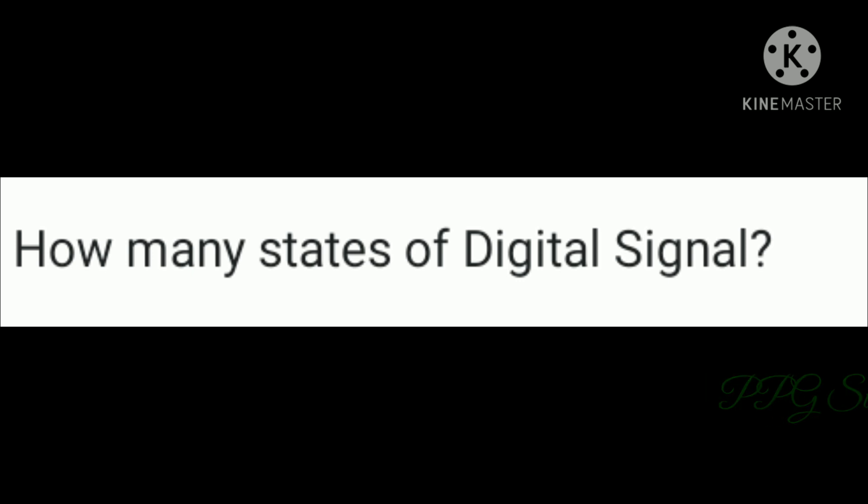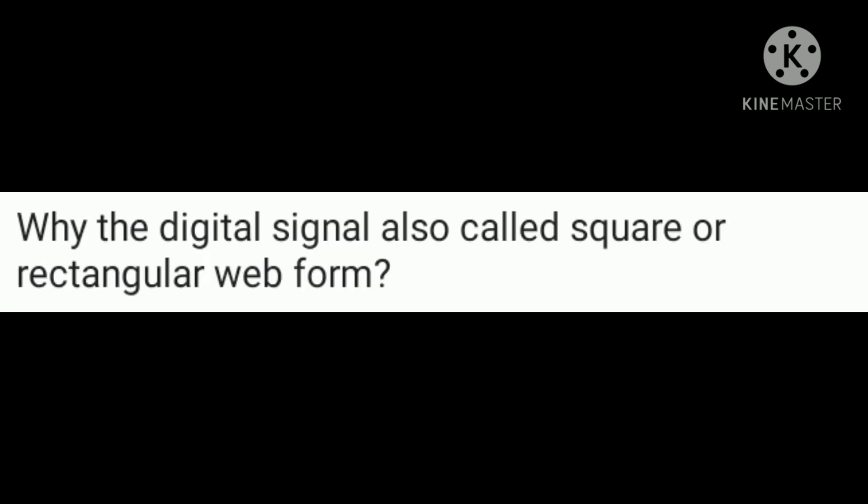How many states does a digital signal have? Basically, it has two states: low state and high state.